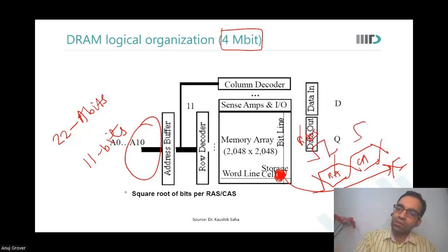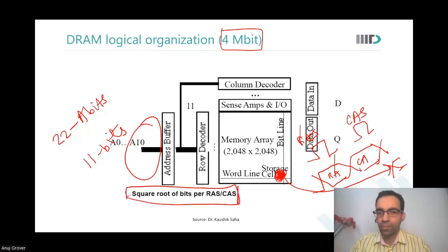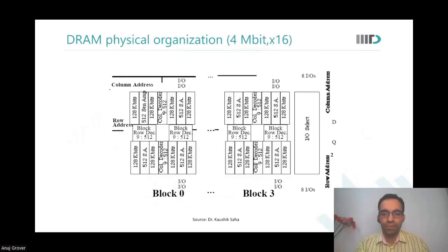And we call column address strobe CAS. So there are these two signals, read address strobe and column address strobe, which define whether I'm giving a row address or column address, which define whether I'm giving a row address or a column address.